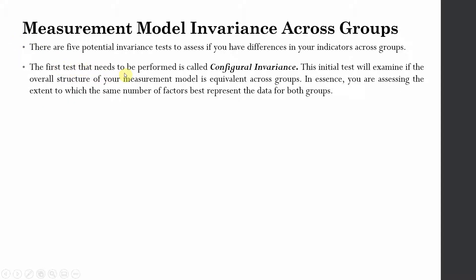The first test that needs to be performed is called configural invariance. This test initially examines if the overall structure of your measurement model is equivalent across groups — assessing the extent to which the same number of factors best represent the data for both groups. You are comparing your measurement model across the groups, and if the measurement model is similar across the groups, this establishes configural invariance.